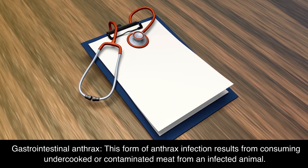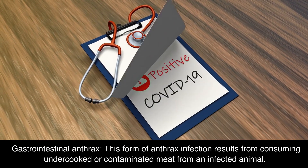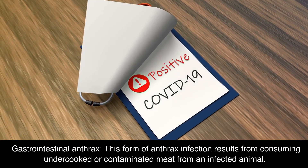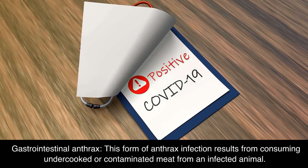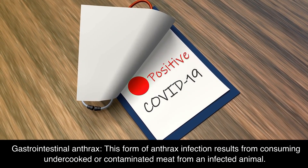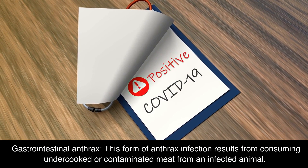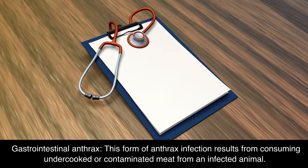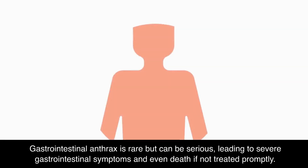Gastrointestinal anthrax results from consuming undercooked or contaminated meat from an infected animal. It is rare but can be serious, leading to severe gastrointestinal symptoms and even death if not treated promptly.